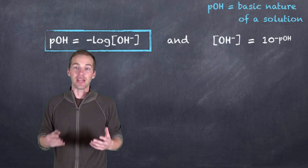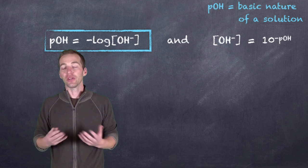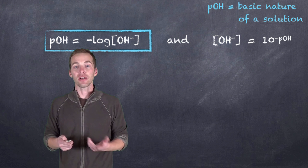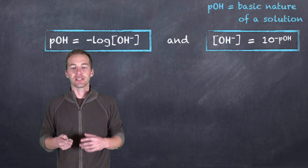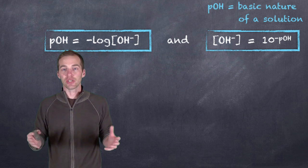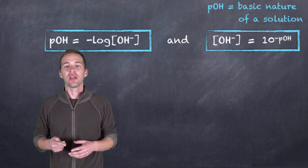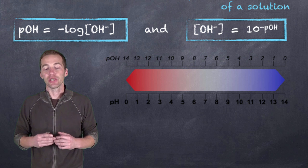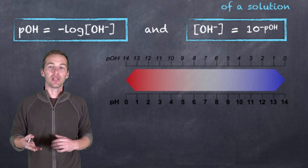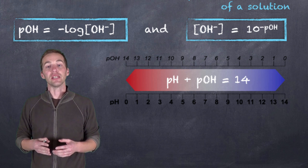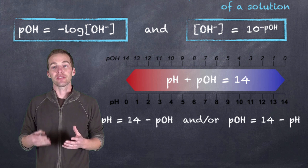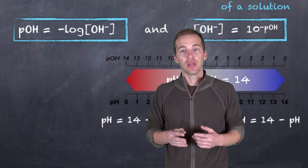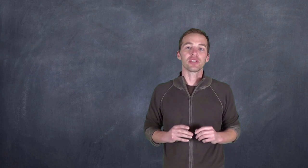We can perform a very similar calculation called pOH. pOH is determined by taking the negative log of the hydroxide ion concentration, and if we know the pOH of a solution, we can raise 10 to the negative pOH to find the hydroxide ion concentration. There's a relationship between these two: pH values range from 0 to 14 and pOH values range from 14 to 0, so pH plus pOH equals 14. This allows us to find pOH from pH and vice versa.